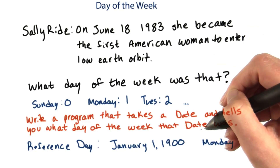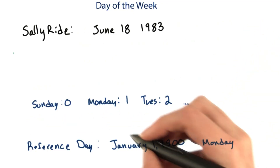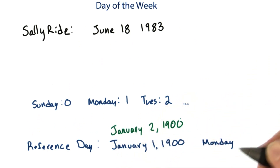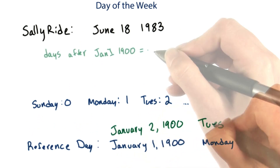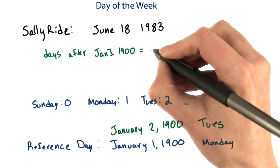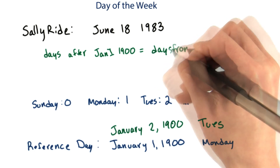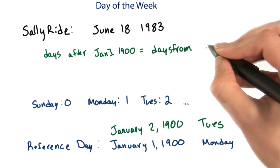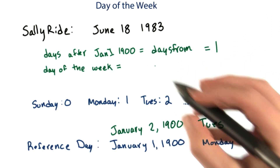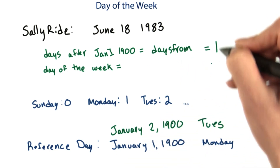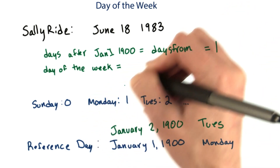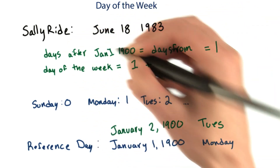Before I write the code for this, I want to work it out for a couple of examples. Probably the easiest example would be January 2nd, 1900, since I know that would be a Tuesday. I can calculate the days that January 2nd is after January 1st by using the daysFrom method on the day object — in this case it would give 1. The day of the week would be the reference day plus the number of days that we are away from it, so in our case, Monday plus the number of days after.